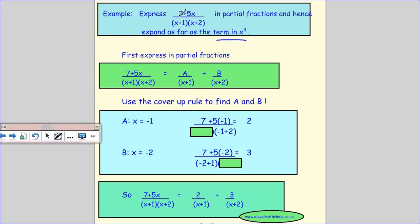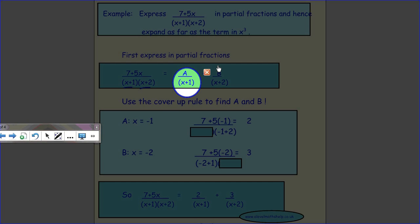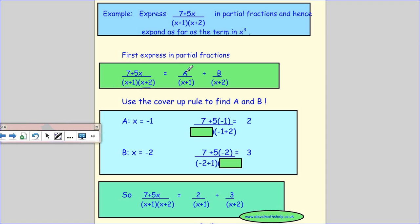So remember how to put this in partial fractions. We look at the two brackets at the bottom of our fraction and we put A over one of them and B over the other one. And then we want to find the value of A and we're going to use a cover-up rule. So we look at the denominator under A. We say when does it equal zero? It equals zero when x equals minus one. We then cover up our x plus one and then we substitute the minus one into the rest of it. So seven plus five times minus one minus one plus two. So that's what I've got here and that equals two.